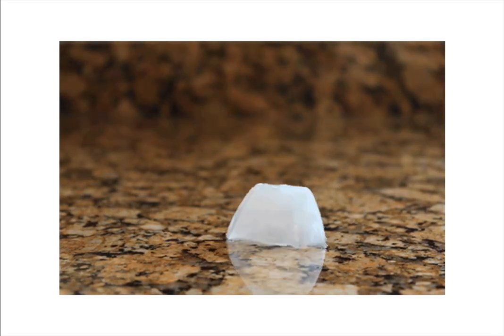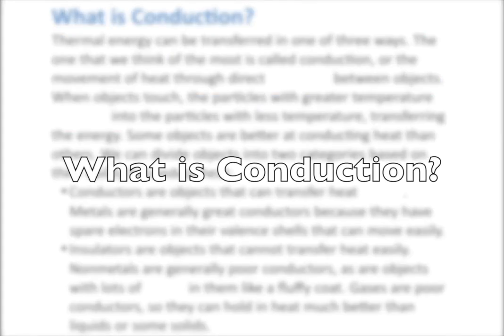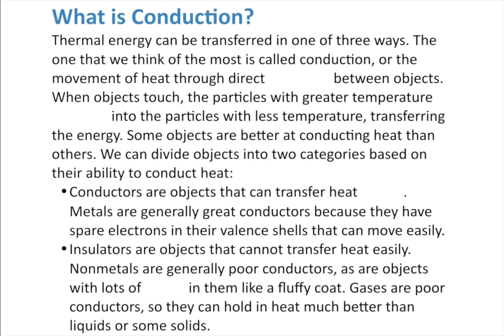So let's add 'heat' to our graphic organizer — it's the movement of thermal energy from one object to another. We'll spend the rest of this lesson talking about the three ways heat transfer happens. Thermal energy can be transferred in any one of three ways: conduction, convection, and radiation — which, if you're in my sixth grade class, you first learned about in fourth grade.